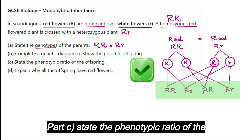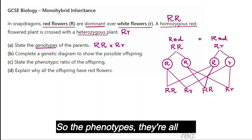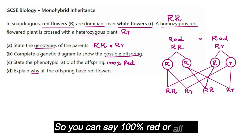Part C: state the phenotypic ratio of the offspring. The phenotypes are all red, so you can say 100% red or all red.